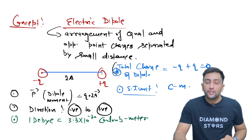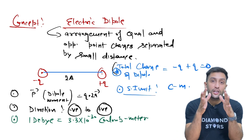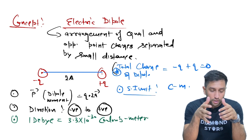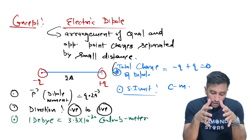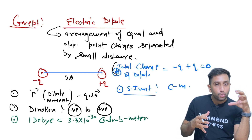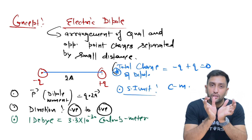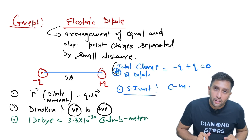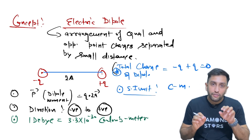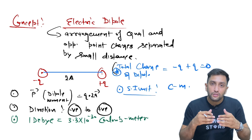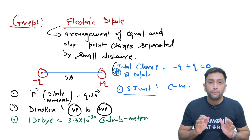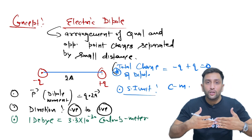Now let me switch to the next concept. In this video, we will be discussing regarding the electric dipole — what actually the electric dipole is and all the concepts related to it. The arrangement of equal and opposite point charges, that means one minus q charge and one plus q charge separated by a very small distance — the whole arrangement is known as electric dipole. Let me take that small distance as 2a, which is generally taken in your book. So minus q and plus q are separated by small distance 2a.